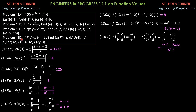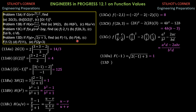Problem 13d: if f(y) = square root of (2y plus 3), find f(−1). So f(−1) is square root of (2 times −1 plus 3) = square root of 1 = 1. For f(4): square root of (2 times 4 plus 3) = square root of 11.